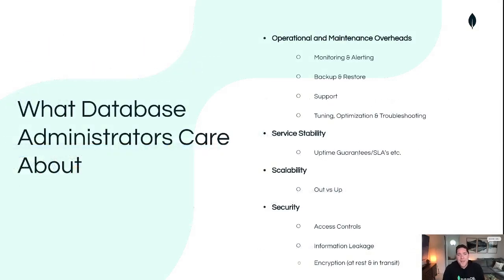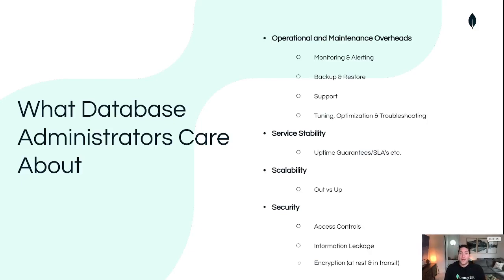So now, what do database administrators care about? First and foremost, database administrators have to wear a lot of hats. A rough analogy would be that DBAs kind of act as mechanics for the database — they are going to monitor and tune and maintain the database, make sure that the check engine light isn't coming on, and if it does, making sure that they can quickly address the source of that problem. The first component DBAs will factor for is the operational and maintenance overhead — how difficult is this system going to be to maintain, and is there a suite of monitoring and alerting tools that will give us the visibility we need to ensure the database is performing?